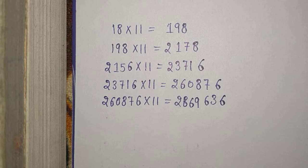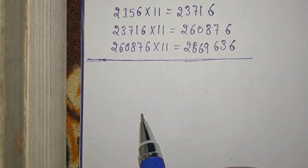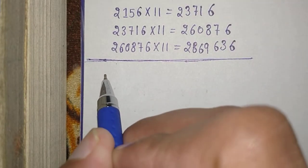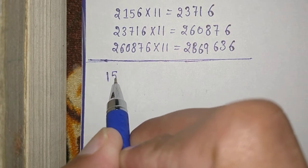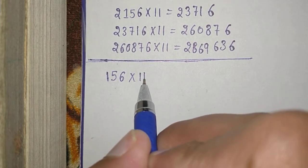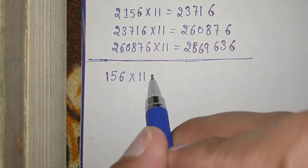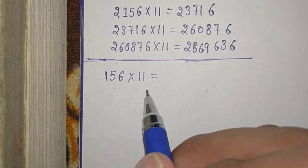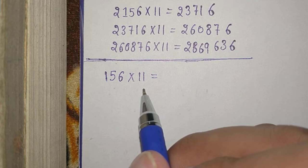So let us start. Friends, here is a 3 digit number that is 156. We have to multiply it by 11. We will try to understand it with the help of some steps.